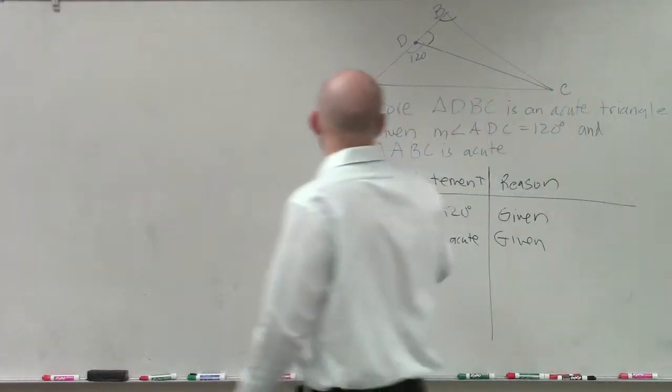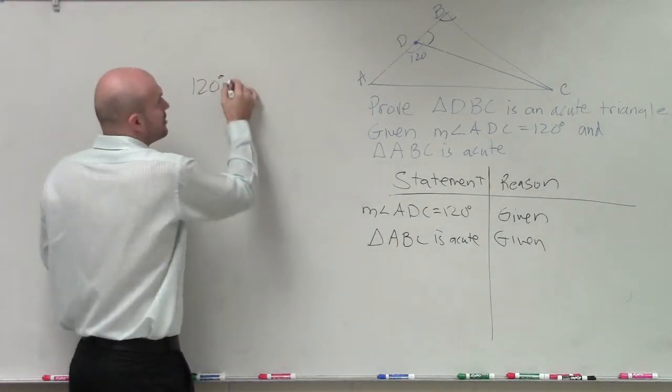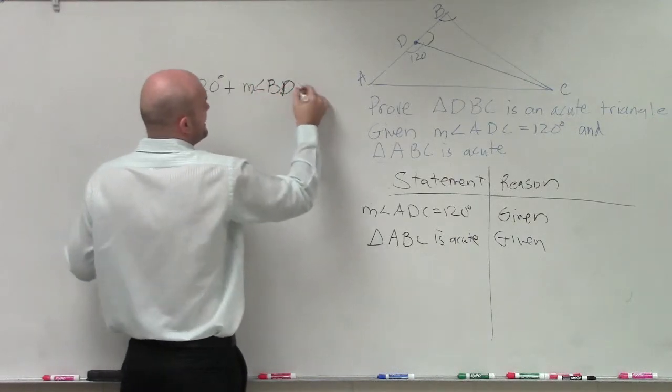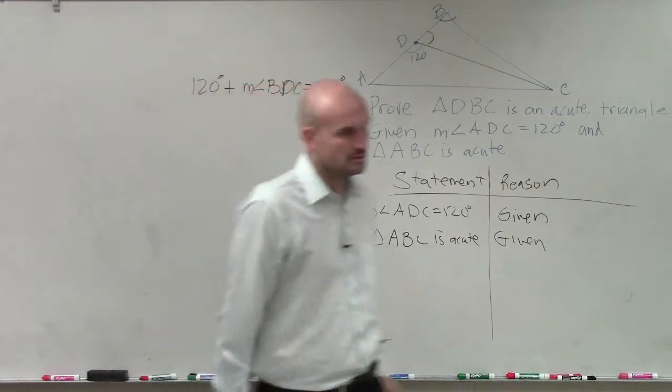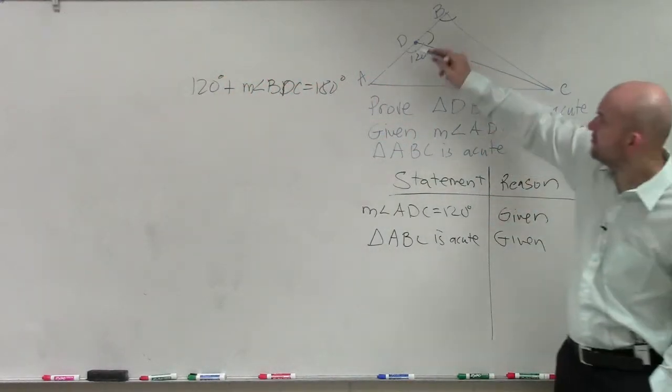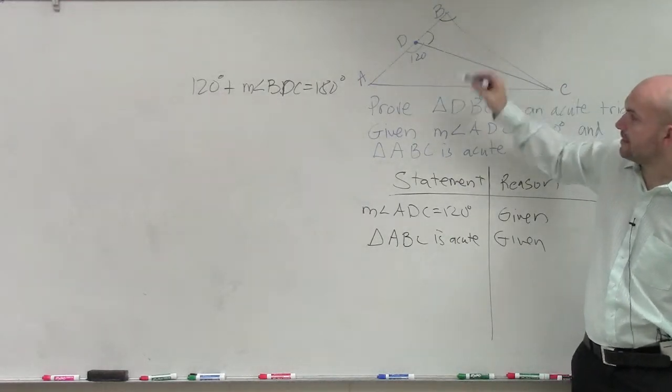So therefore, ladies and gentlemen, I can go and solve this. And I can say 120 degrees plus the measure of angle BDC is equal to 180 degrees. You guys see that? This angle and this angle have to add up to 180 degrees.